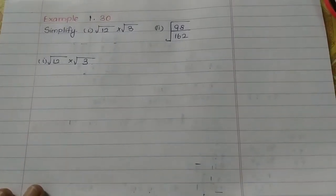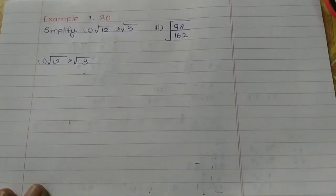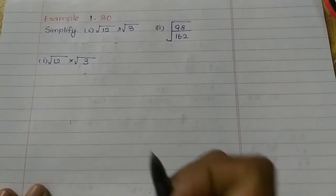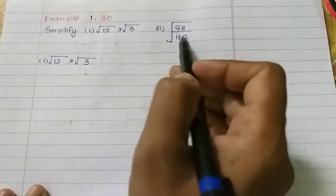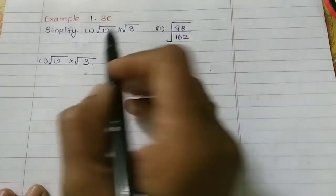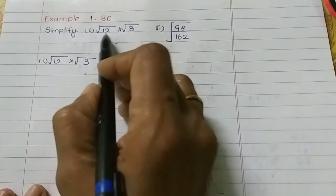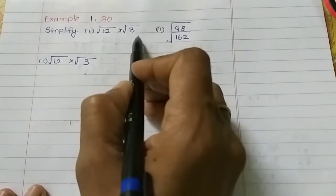Hi students, in this video we will see Example 1.30. Simplify — there are two subdivisions. The first subdivision is root 12 into root 3.